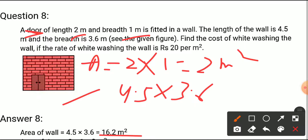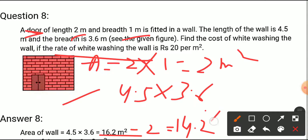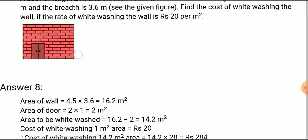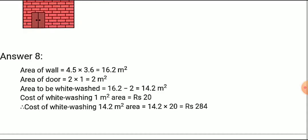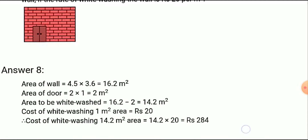To find the cost of whitewashing the wall, we calculate the area of the wall excluding the door. So 16.2 minus 2 gives 14.2 meter square. Then we multiply by the rate of 20 rupees per square meter to get the cost of whitewashing: 284 rupees. This is a very simple question.